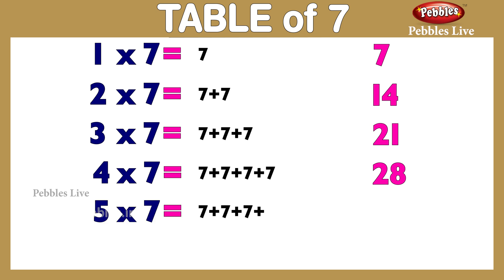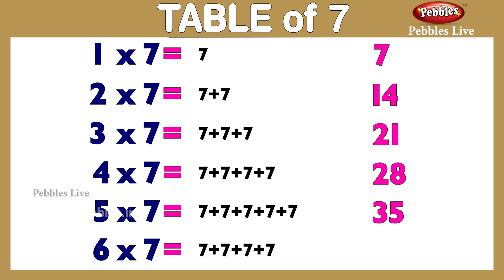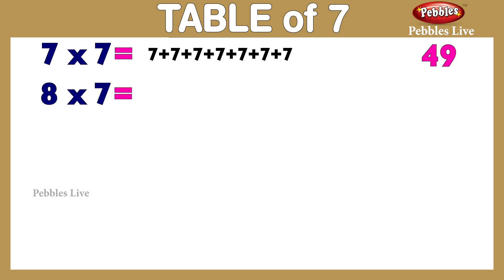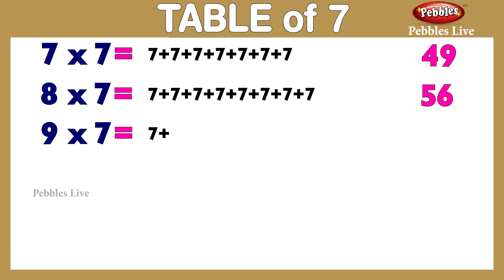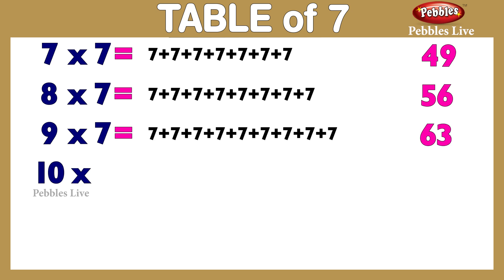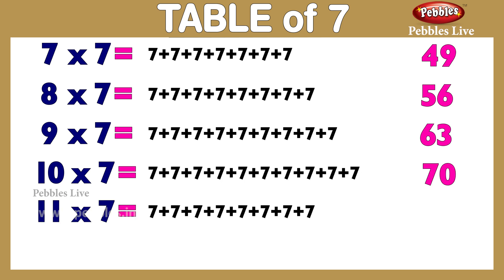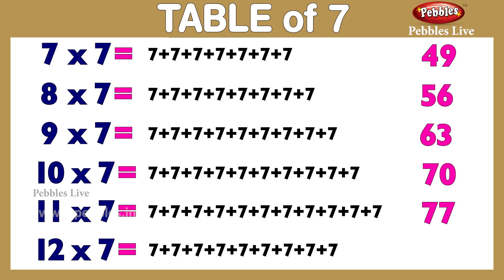Table of 7: 1 seven is 7, 2 sevens are 14, 3 sevens are 21, 4 sevens are 28, 5 sevens are 35, 6 sevens are 42, 7 sevens are 49, 8 sevens are 56, 9 sevens are 63, 10 sevens are 70, 11 sevens are 77, 12 sevens are 84.